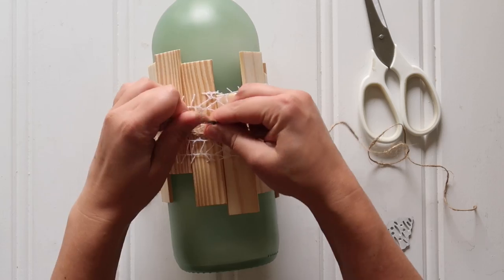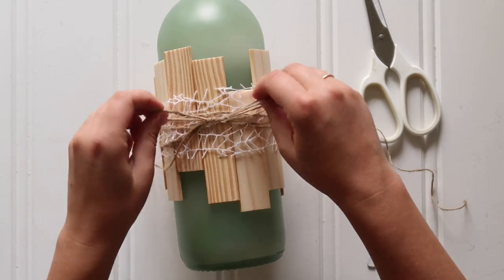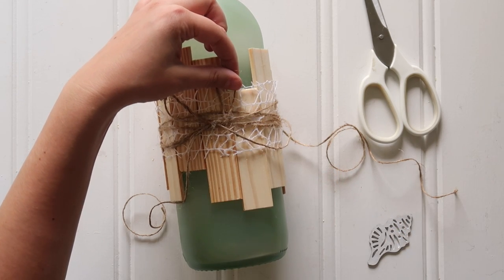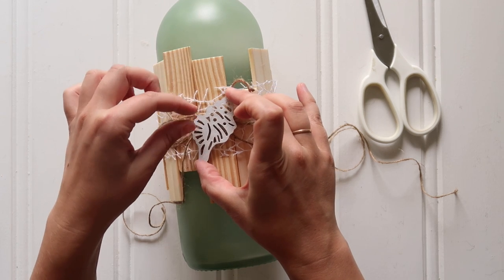Then I finished the look with these little cardboard decals from Dollar Tree. I took one that was a seashell, painted it white, super simple, and hot glued it right in place.